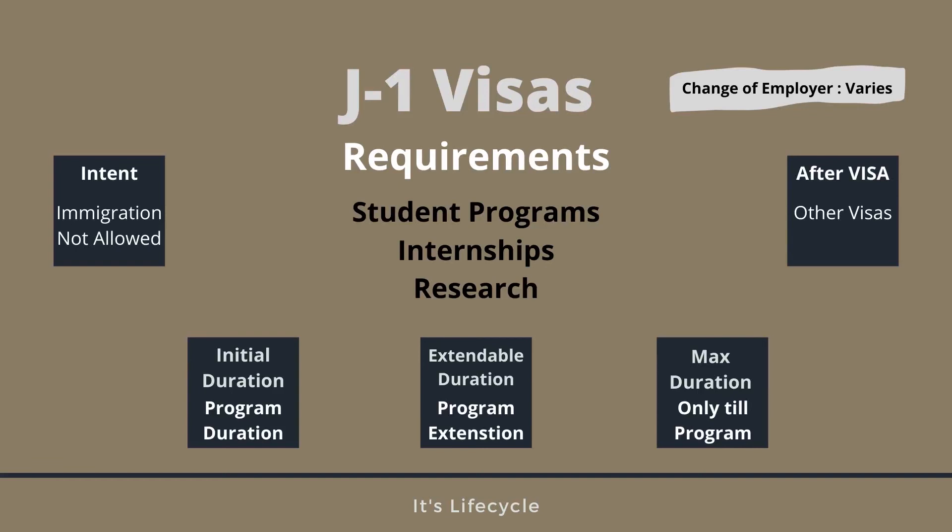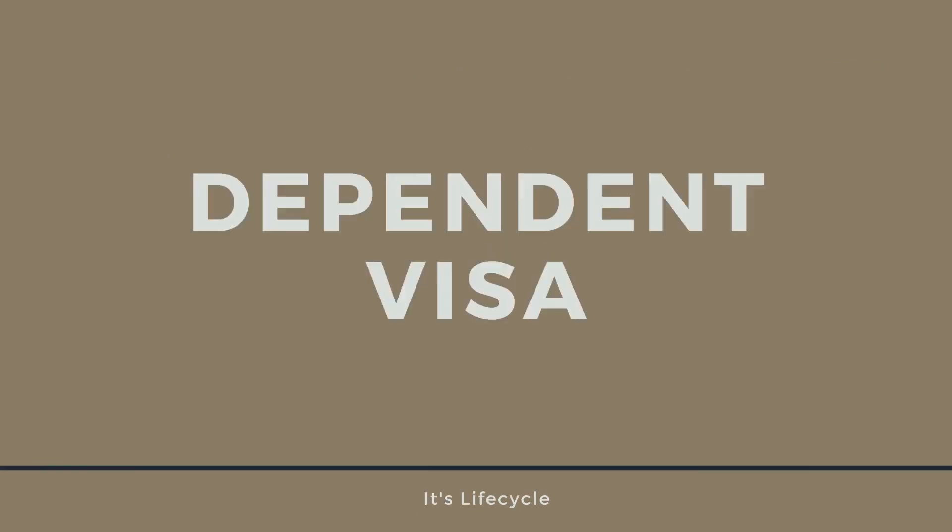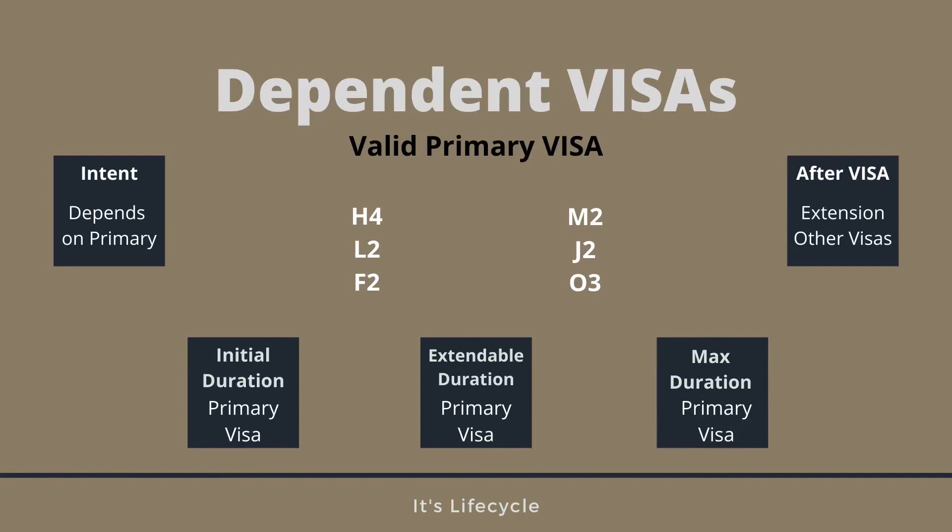Now we will talk about dependent visas. This visa covers the primary visa holder's family — their children and spouse. What are the dependent visas? H-1B is the dependent on H-4 visa, L-1A is the dependent on L-2, F-1 is the dependent on F-2, M-1 is the dependent on M-2, O-1 is the dependent on O-3, and J-1 is the dependent on J-2. Work permission exists for some dependent visas, but in H-4, we start with the primary holder being in green card processing.